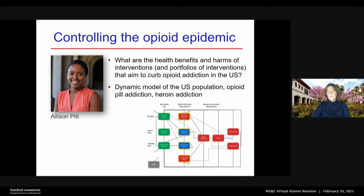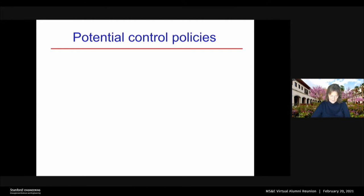Basically she looked at opioid use status: does a person not use opioids, do they use it with a prescription or without a prescription? And then pain status — someone who has no pain, someone who has acute pain right after surgery in the first month or after an accident, and then chronic pain, longer-term pain. So she made a dynamic model. And we worked with Professor Keith Humphreys from the Department of Psychiatry and Behavioral Sciences at Stanford Medical School to identify what are the policies that people are thinking about. These policies fall into two areas: prevention and treatment.